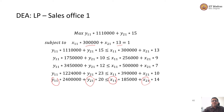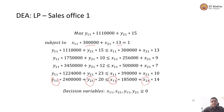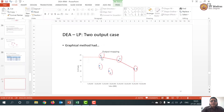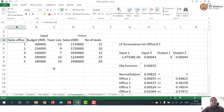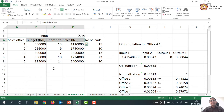The decision variables are the input and output weights for the first sales office, because this problem is being solved by the first sales office. Now let us look at the Excel output. We have the Excel sheet with the data: two inputs — budget and team size — and two outputs — sales and number of leads. We are formulating the LP for sales office one.